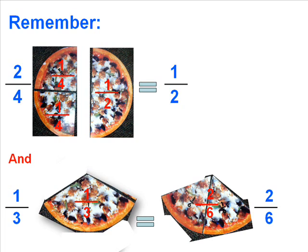1 third is equal or equivalent to 2 sixths of pizza. So 2 sixths is equal to 1 third. Pizza fractions. Let's continue.